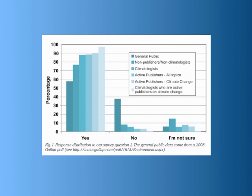I showed you this bar graph in a previous lecture, but let's discuss it in more detail. The figure represents the answer to the question: do you think human activity is a significant contributing factor in changing mean global temperatures? If you look at the different shades of blue in the bar graph, you see that climatologists, particularly those who publish frequently, are in near-unanimous agreement that humans are indeed contributing to the warming of global temperatures.